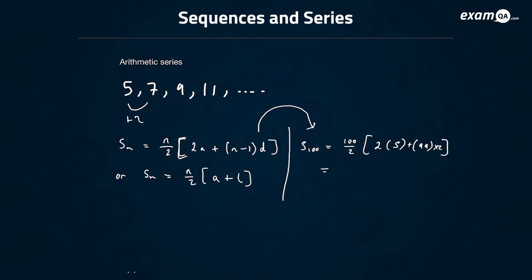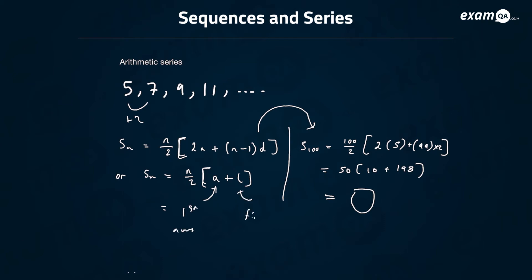Literally just plug that into your calculator and you will get the answer — the first 100 numbers added together. And that is the basic formula. They also give you another formula that's a bit simpler: it's n over 2 times (the first number plus the final number).